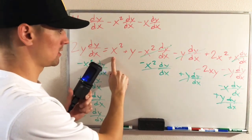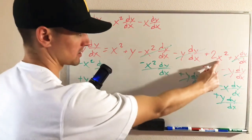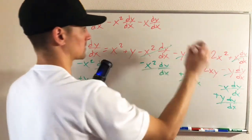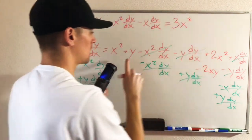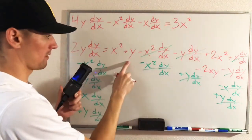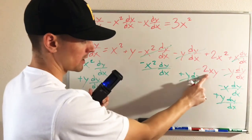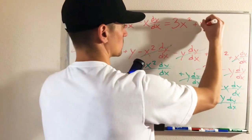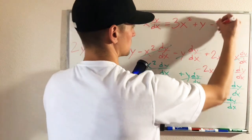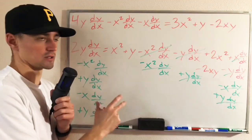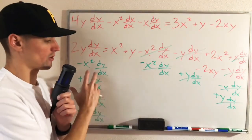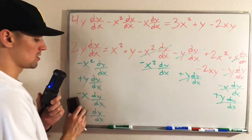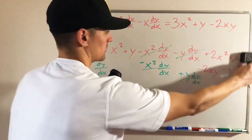Now on the right side of our equation, we have an x squared plus a 2x squared, so that's actually going to give us 3x squared. And then we have a y and then a minus 2xy. So now we've moved all of our dy/dx terms over onto the left side and all of our non-dy/dx terms over to the right side.